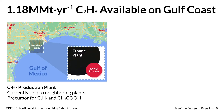Currently, our ethane production facility located on the Gulf Coast annually produces 1.18 million metric tons of ethane, which is sold to neighboring petrochemical companies. Recently, our company has considered incorporating the Stabic process into our petrochemicals complex to produce added-value petrochemicals instead.